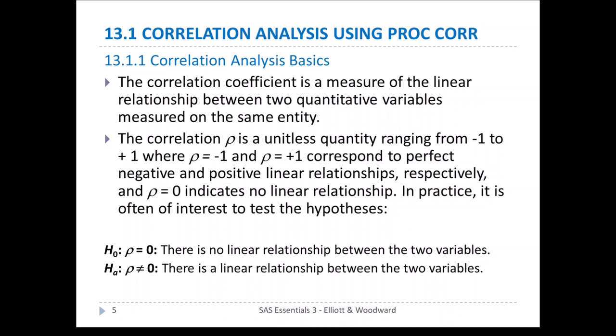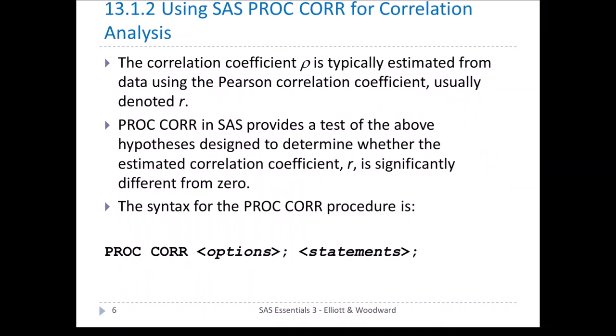In practice, it's often of interest to test these hypotheses. The null hypothesis is that rho equals 0 — that is, there is no linear relationship between the two variables — or the alternative, rho not equal to 0, meaning there is a linear relationship between the two variables. The Pearson correlation coefficient, usually denoted R, is typically used to estimate rho from data. PROC CORR in SAS provides a test to determine whether the estimated correlation coefficient R is significantly different from 0.